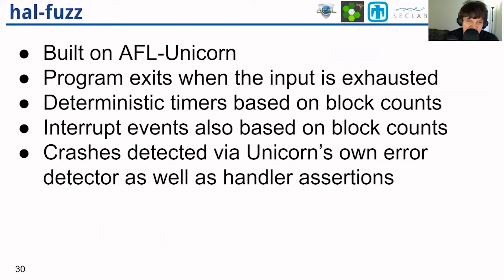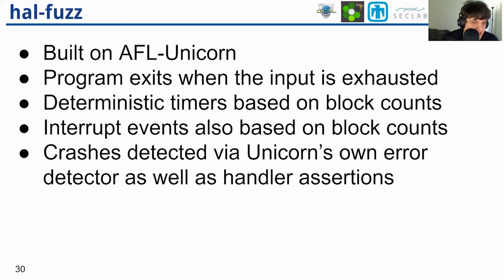Once we have a completed system, we can take it out fuzzing. We built a fuzzing-oriented variant of Hallucinator called HalFuzz, based on the AFL Unicorn framework. Along with this, we had to solve interesting problems that come with fuzzing firmware, such as when the program terminates, what to do about non-determinism from timers and interrupts, and crash detection.